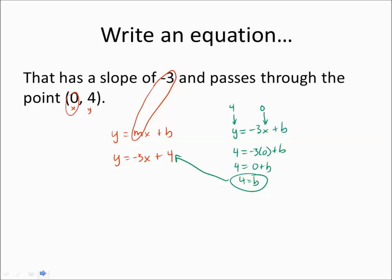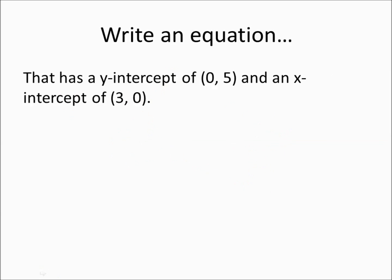Alright, so this is just kind of an introduction to different ways we can work with this. This one has a y-intercept of (0, 5) and an x-intercept of (3, 0). Now, you'll notice that for our normal y equals mx plus b, great, it has a y-intercept of 5, so that's this one. Now we've got a problem. We don't have the slope.